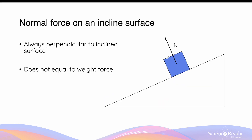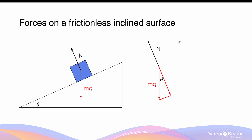On the inclined surface, the normal force is always perpendicular to the surface, but it does not remain equal to the weight force. The normal force is actually equal to the component Mg cos theta. So when the mass is on the inclined surface, the normal force does not equal the weight force anymore — it equals the weight force multiplied by cos theta, where theta is the angle at which the surface is inclined.